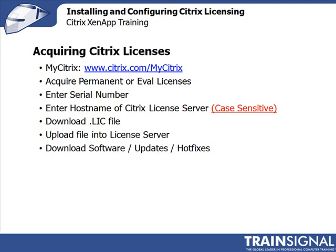During the acquisition of that license file on MyCitrix, you're going to get to a point where they ask you for the actual host name of your Citrix license server. Pay attention that the license server host name is case-sensitive. If it's all uppercase, make sure you input it as all uppercase. You download the license file from the MyCitrix portal, upload that license file on your license server, and you are ready to go. From MyCitrix, you can also download software, updates, hot fixes, and so on.